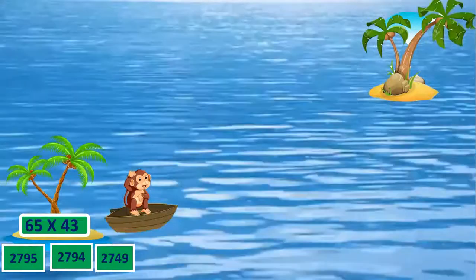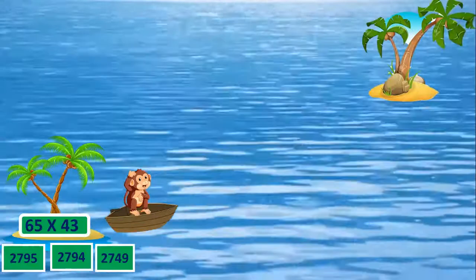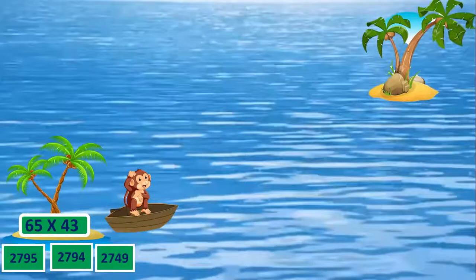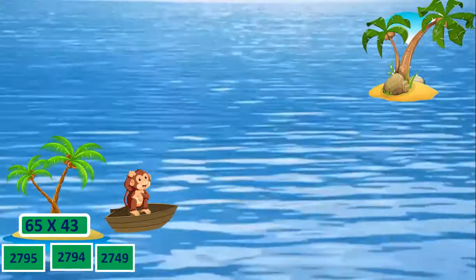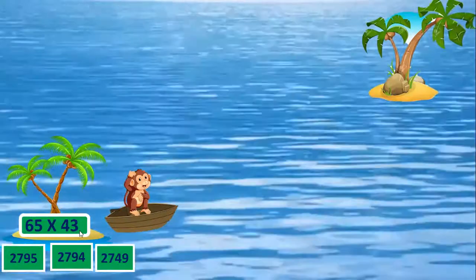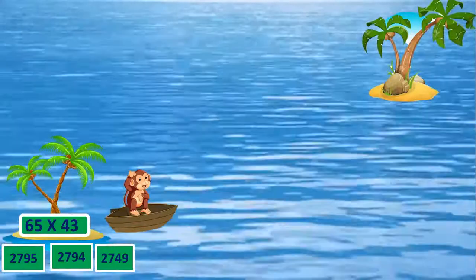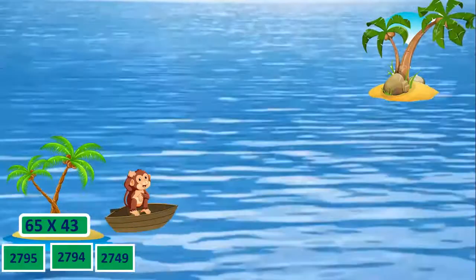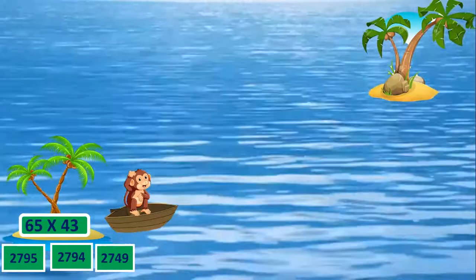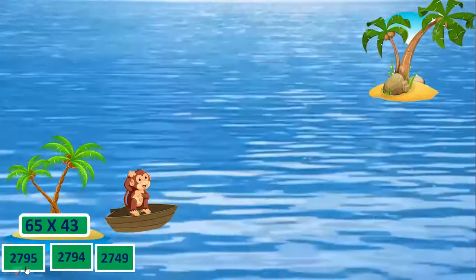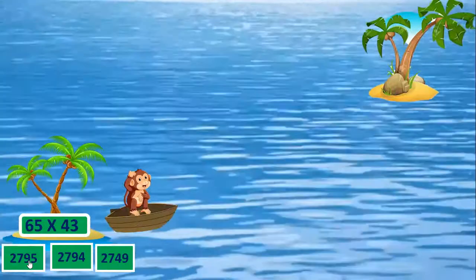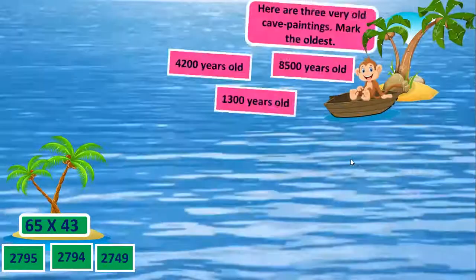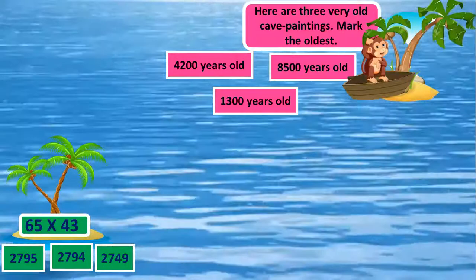You need to multiply 65 and 43. Find out 65 into 43. Children, shall I give a hint to you to do it fastly? In one place we have 5 and 3. When we multiply 5 with 3 we will get 15. So in this multiplication in one place we will have 5. In the three options only one option have 5 in its one place. So clearly this is the answer, 2795.